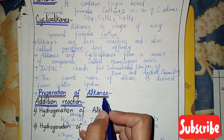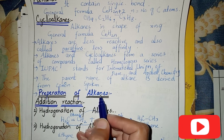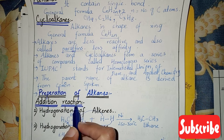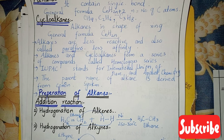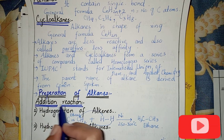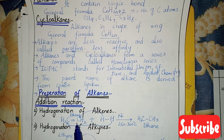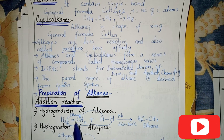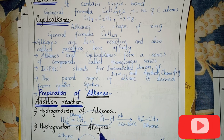Now, preparation of alkanes. How do we prepare alkanes? They can be prepared by the addition reaction of alkenes and alkynes, and by reduction of alkyl halides. Addition reaction is a reaction in which an atom or group of atoms is added to a compound that has a double bond or triple bond. The unsaturated compounds — alkenes and alkynes — undergo addition reactions.